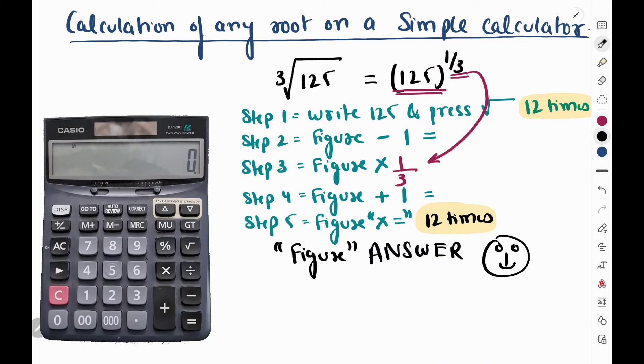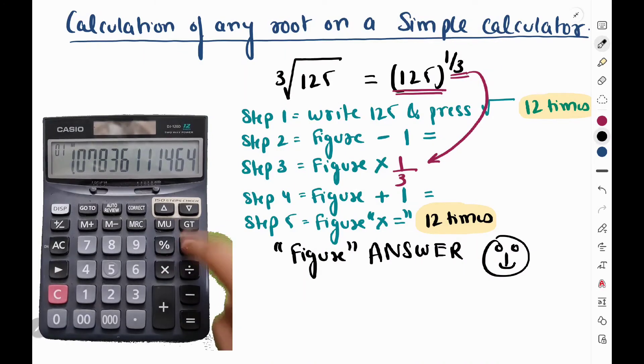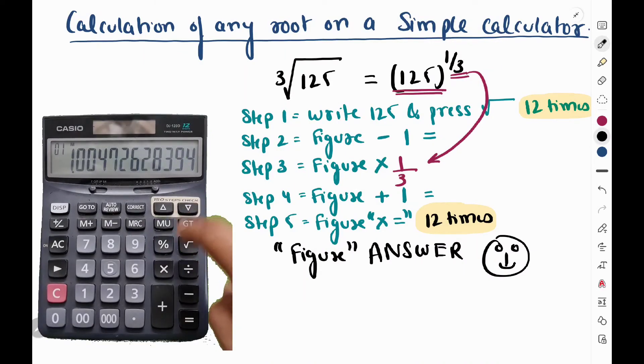Now let's look at the calculator. So our number is, first of all, I have to add 125. I have to write 125 and press 12 times under root. So I have 1, 2, 3, 4, 5, 6, 7, 8, 9, 10, 11, 12.